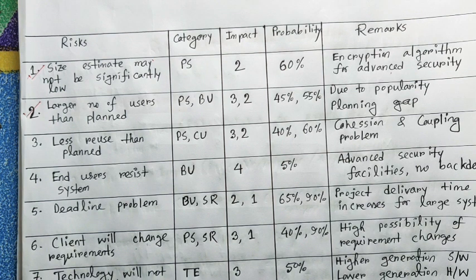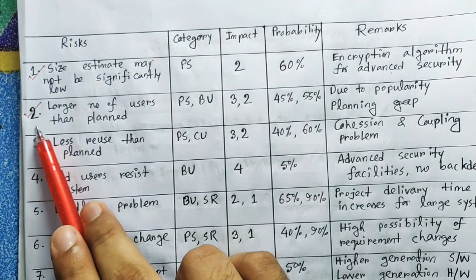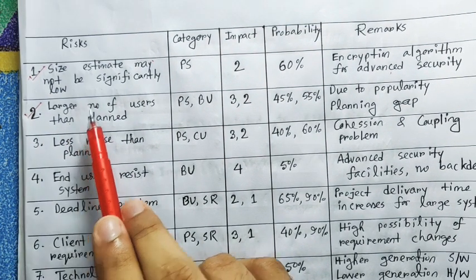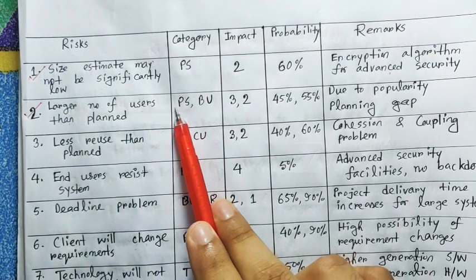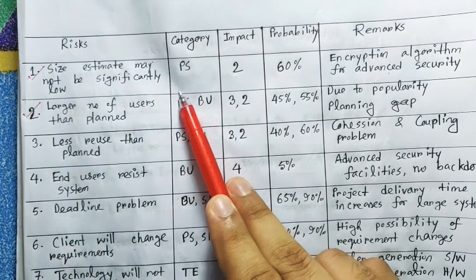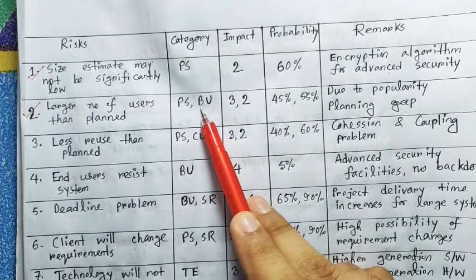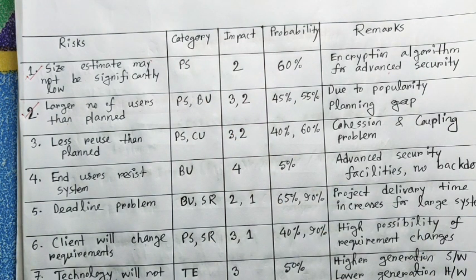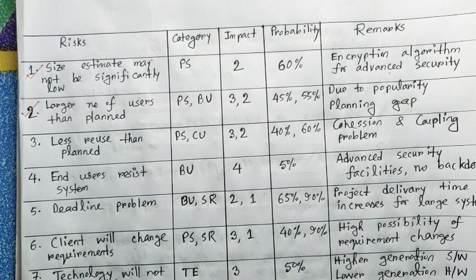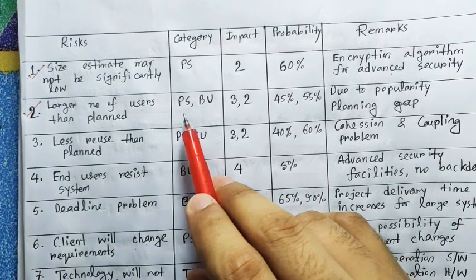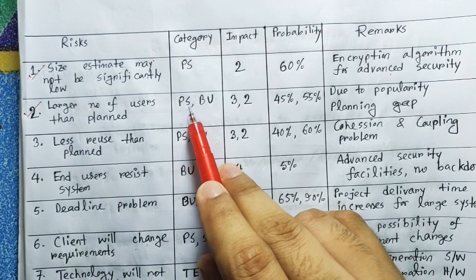If you want to update it, you will have a large size to handle. That means there is a risk. This can result in risk, so to get rid of this risk — when planning is lost in the risk, it is not the size of the capacity. This is a category — PS, or product size-related, and BU, or business impact. So this is how I said that the category is only one category of risk identified.